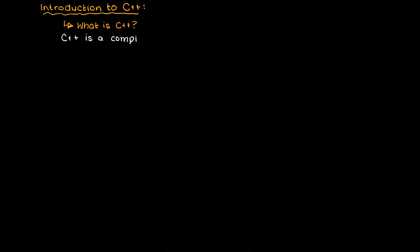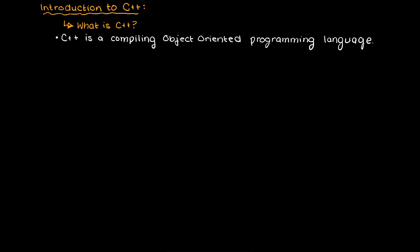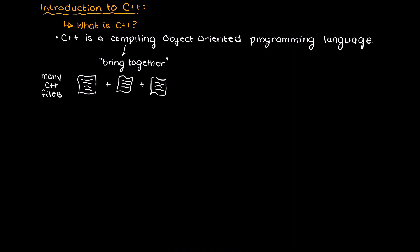Fundamentally, C++ is a compiling object-oriented programming language. So what does that mean? Well, first think of compiling to mean bringing together or collecting. When we code in C++ we will have many C++ files which, once we become familiar with the programming language, become easily readable to us. Then we will compile and link these files so that it makes sense to our computer.